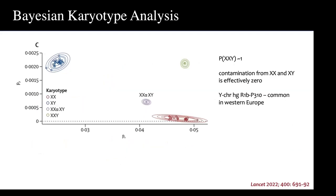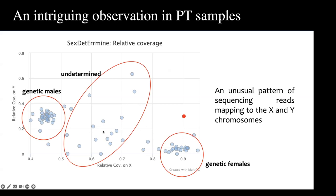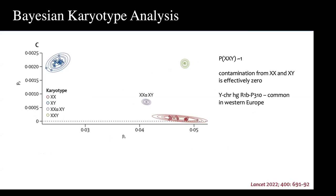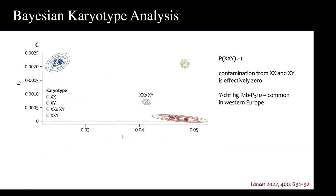For an XXY individual, the number of copies on the X chromosome would be similar to that seen in females, but there would also be reads on the Y chromosome comparable to genetic males. We simulate this and ask where we expect the reads to fall within the plot. Each dot is empirical data; each ellipse is simulated data showing where you'd expect genetic males and females to fall given different parameters like contamination and read count. The individual of interest falls within the expected variation for an XXY individual.